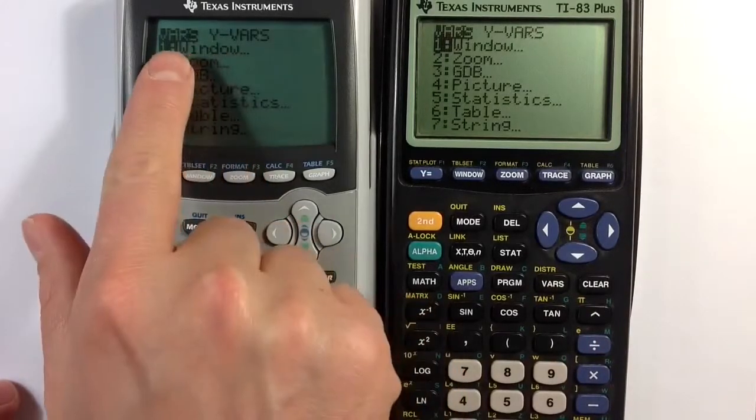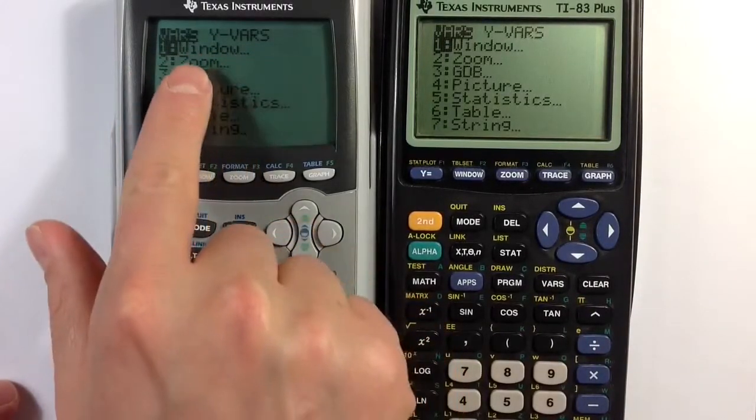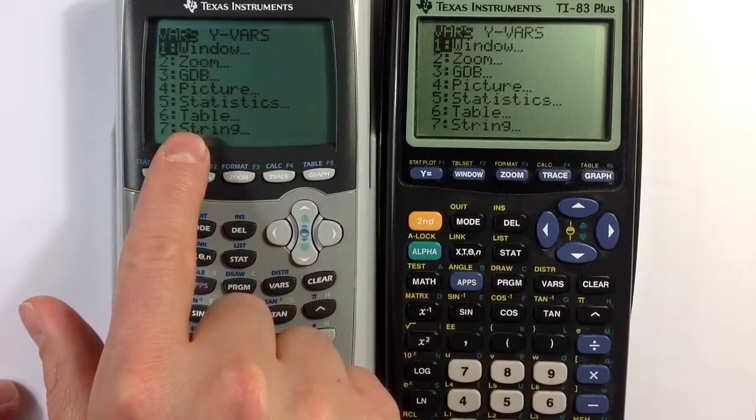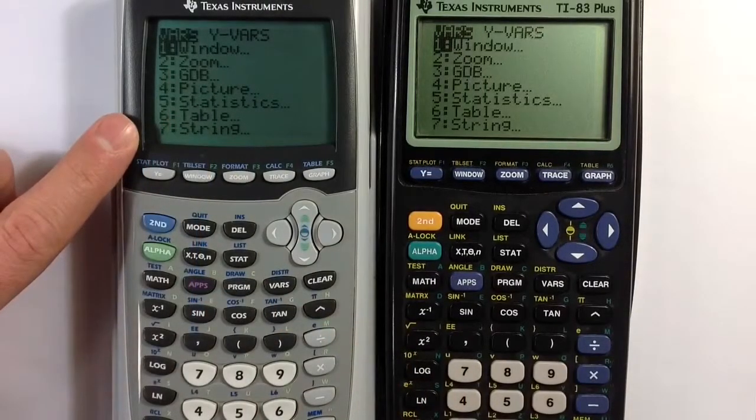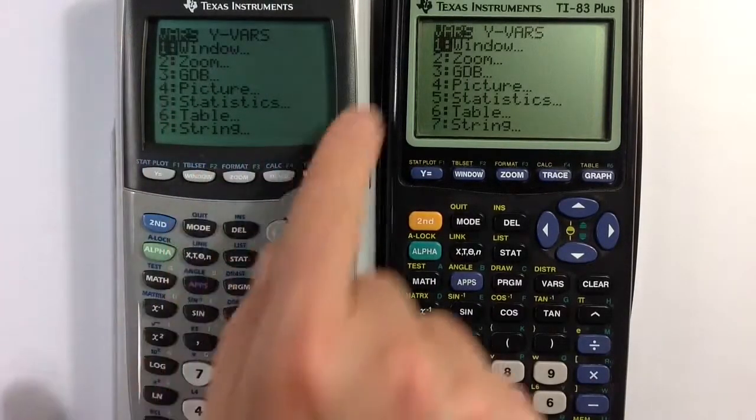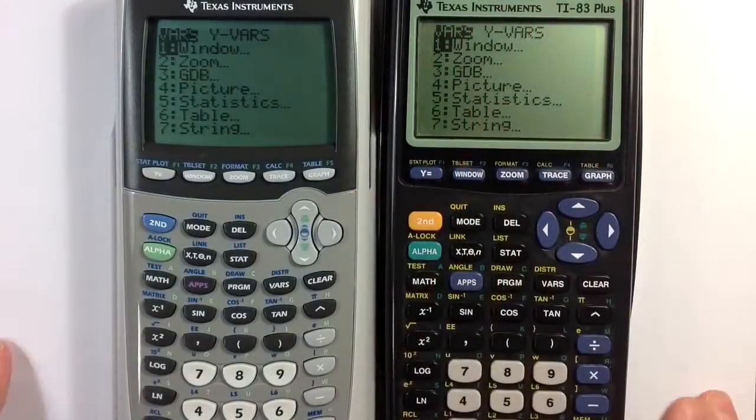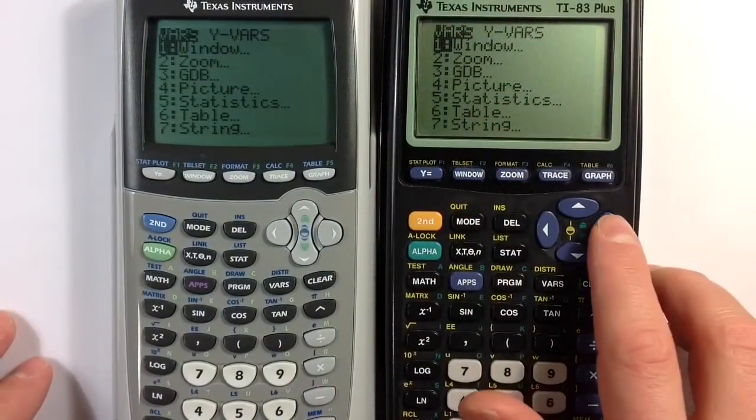it takes us to a menu which has two options: x vars and y vars. And then there are some choices we can make. There are settings related to the window, for example, that determine how the display is shown when you graph functions. Functions, y vars.